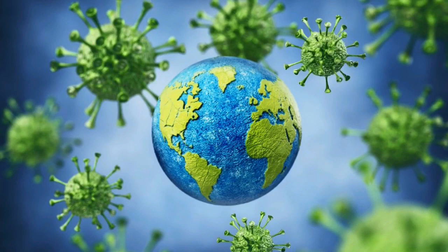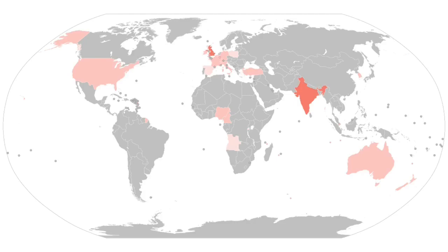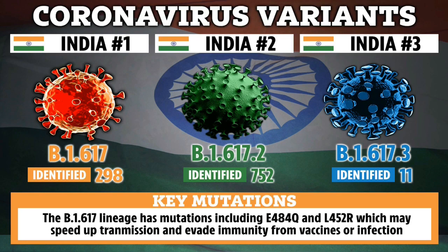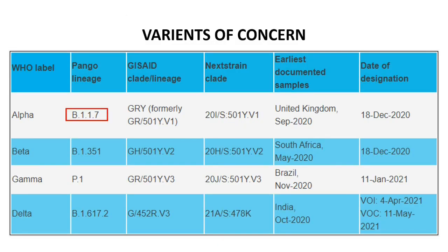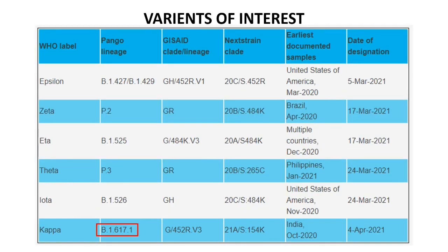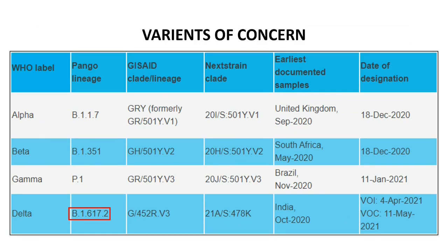The strain B1617 is almost 1.5 to 2 times more transmissible than the strain that first appeared in Wuhan 18 months ago, and it is now present in more than 50 countries around the globe. As of now, there are three versions: B16171, B16172, and B16173 with slight variations and mutations. To avoid confusion regarding names, WHO started to assign simple labels to various strains of novel coronavirus globally. For example, strain B117 UK variant is named alpha, B1351 South Africa variant is named beta, B1 the Brazil variant is named gamma, and the double mutant variants B16171 is named kappa and B16172 is named delta.